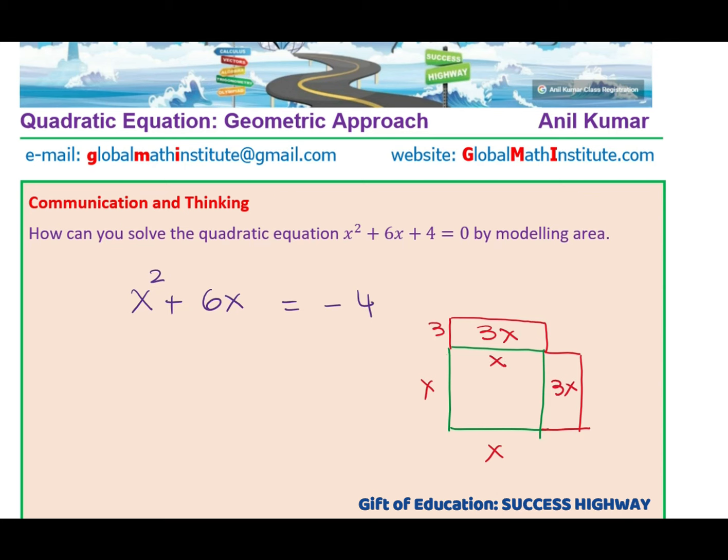The area, if you consider, is x² here. So the area is x² + 3x + 3x, which is x² + 6x. However, you can complete this square by extending each side by 3 units. Do you see that? And that is completing the squares. Each side now becomes x + 3.